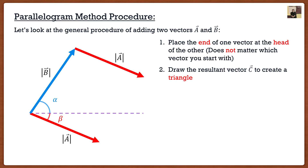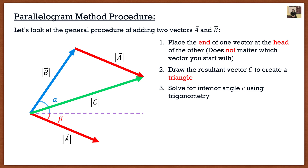The next step is to draw our resultant vector to create that triangle. The resultant vector starts at the tail of B and goes to the head of A. So our resultant vector C starts at the very left side and goes up to the right, giving us a nice triangle. This is where cosine law and sine law come into play. To use cosine law to solve for the magnitude of C, we need one of the interior angles — specifically interior angle c, which is on this side. The magnitudes of A and B are given, so the last piece we need is that interior angle c.